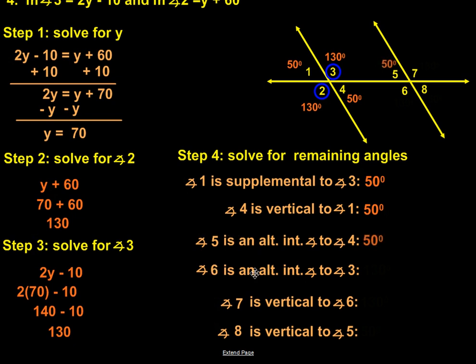Angle number six is an alternate interior angle to angle number three, which also means they have to be congruent.